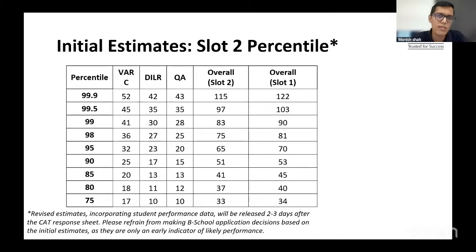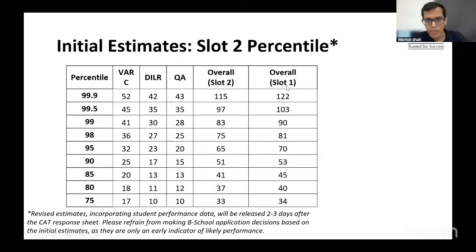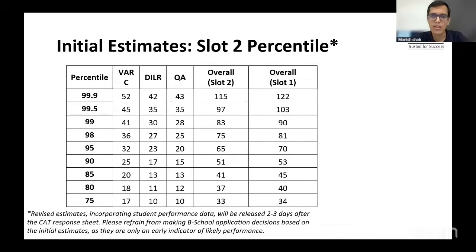This paper was found to be a little more difficult than Slot 1. In one number: we are expecting the 99th percentile to be at a score of 90 in Slot 1, but in this slot it should come down to roughly 83. For the section-wise 99th percentile breakdown: VARC at around 41 marks, LRDI at 30 marks, and Quant at 28 marks. Quant was the toughest section of the three this time as well.